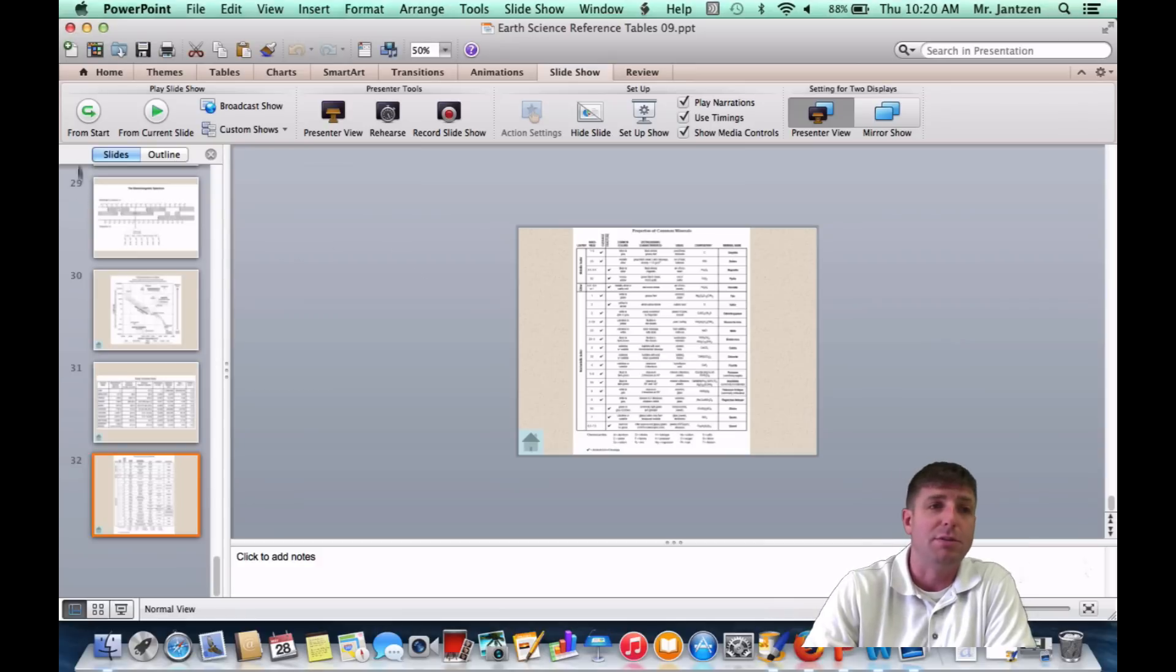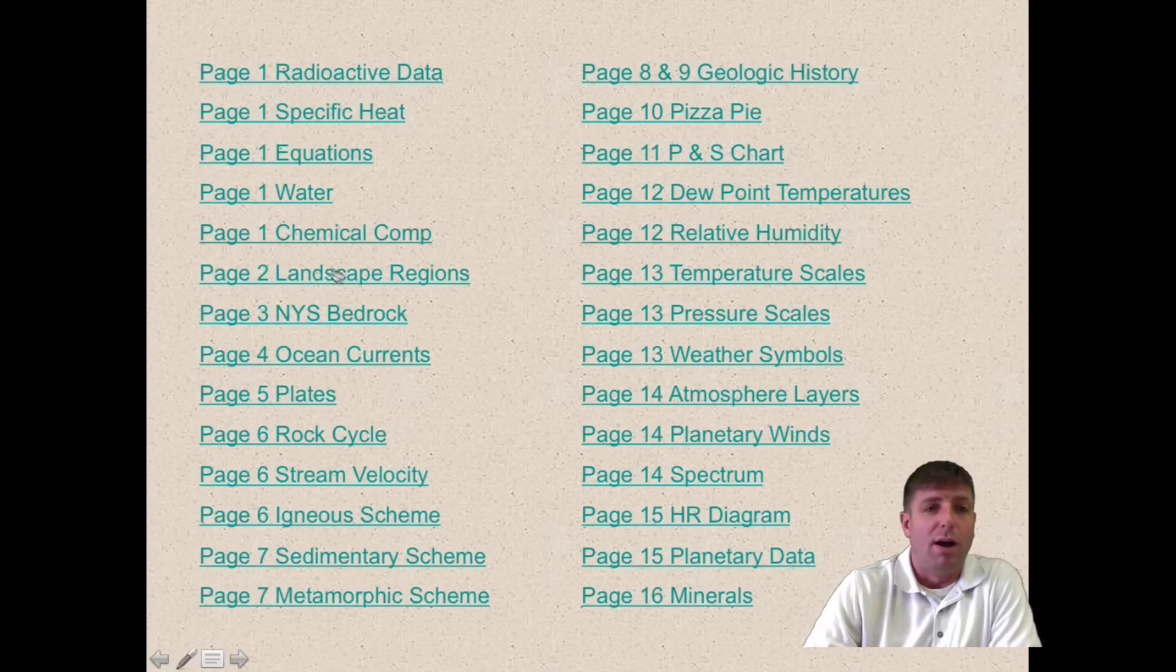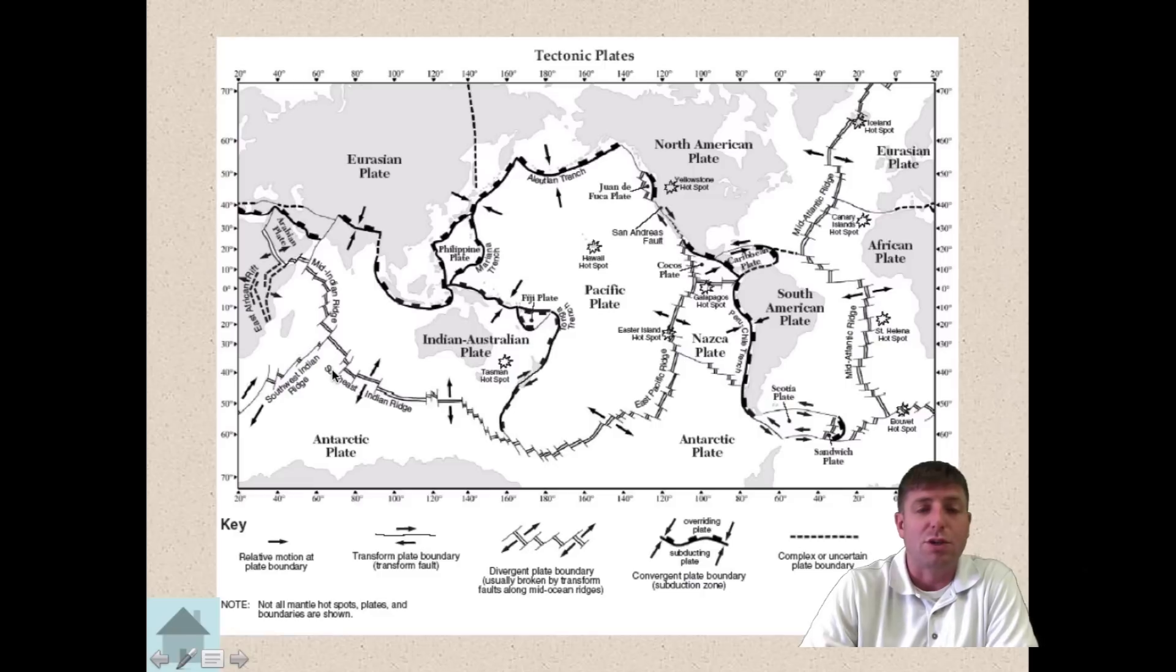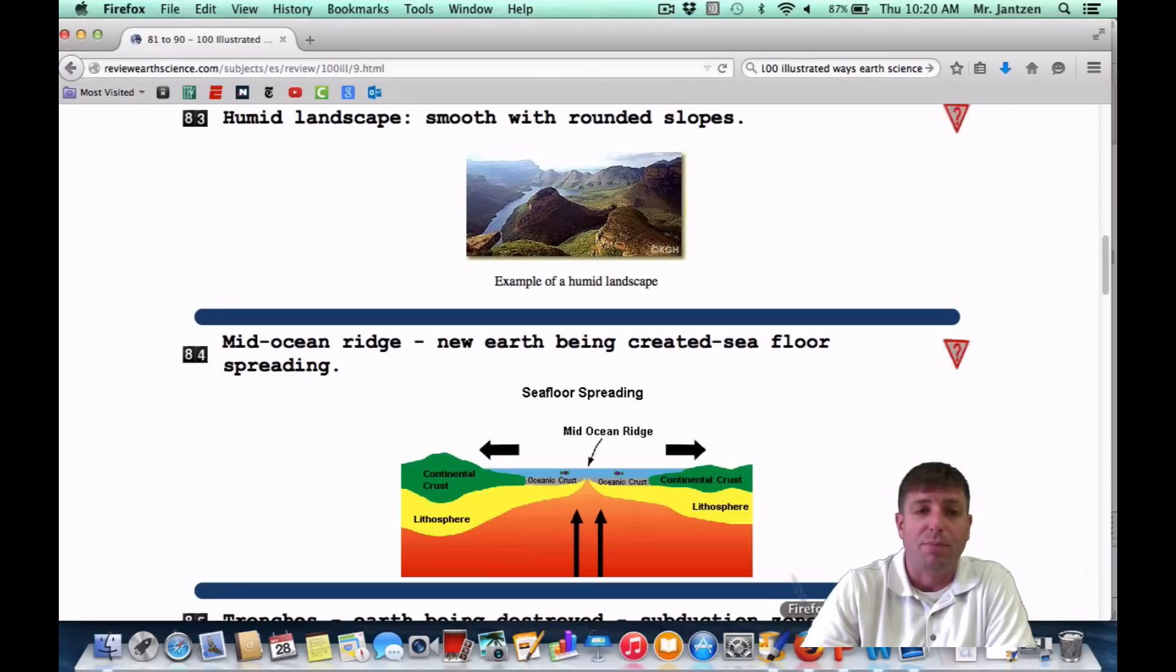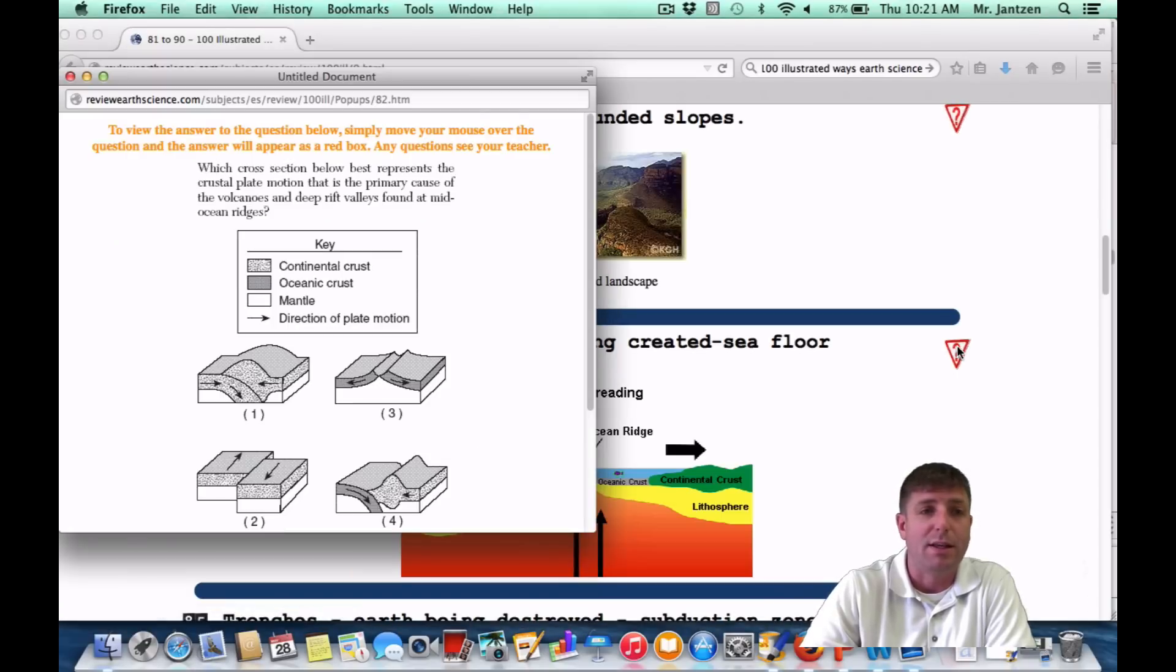You can actually go to your reference tables and see, once again, your plates chart. And you can see any kind of ridge has the arrows going out from one another. So that is a divergent boundary as shown right here. Once again, as a regents question, it may appear something like this: which cross-section represents the crustal plate motion that is the cause of volcanoes and deep rift valleys found at mid-ocean ridges? Mid-ocean ridges is your key words right there. So once again, you're going to be with a divergent boundary or choice three.